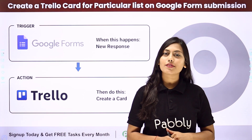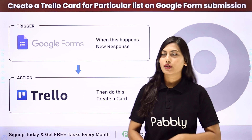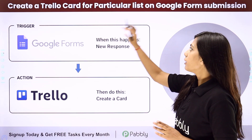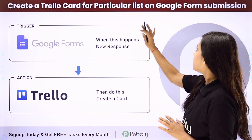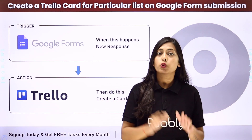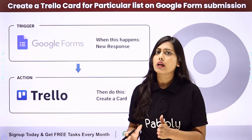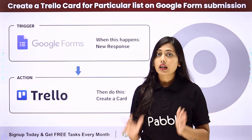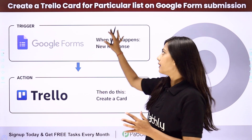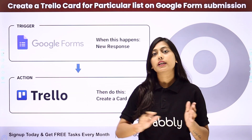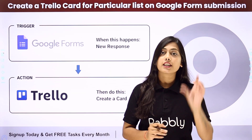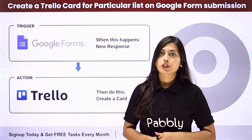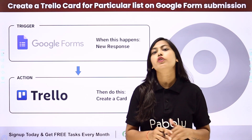Hello everyone. In this video we are going to learn how to create a Trello card for a particular list on Google Forms submission. As soon as a Google Form is submitted, a card with all the details from the form submission will be created in Trello in a specific list in a workspace or board.